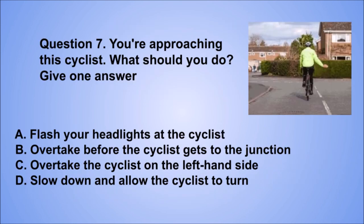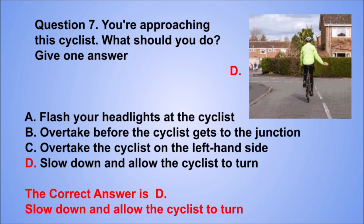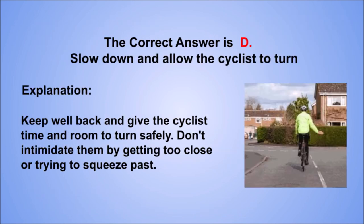Question 7. You're approaching this cyclist. What should you do? Give one answer. A. Flash your headlights at the cyclist. B. Overtake before the cyclist gets to the junction. C. Overtake the cyclist on the left-hand side. D. Slow down and allow the cyclist to turn. The correct answer is D, slow down and allow the cyclist to turn. Keep well back and give the cyclist time and room to turn safely. Don't intimidate them by getting too close or trying to squeeze past.